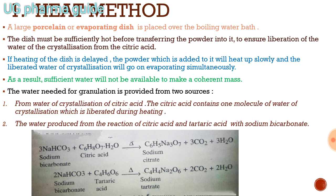When you heat the citric acid, the citric acid powder will be converted into a mass. The water needed for granulation is provided from two sources: first, from the water of crystallization of citric acid — citric acid contains one molecule of water of crystallization which is liberated during heating; second, from the reaction of citric acid and tartaric acid with sodium bicarbonate.